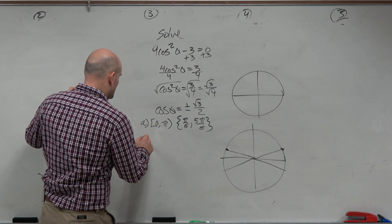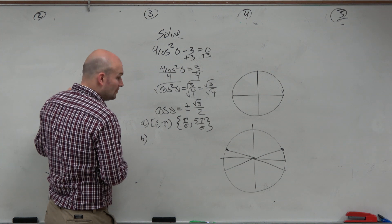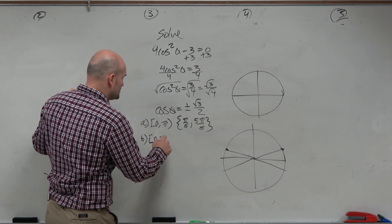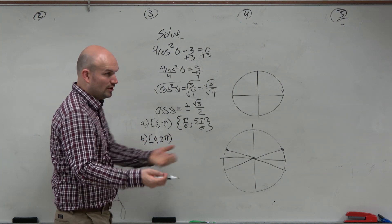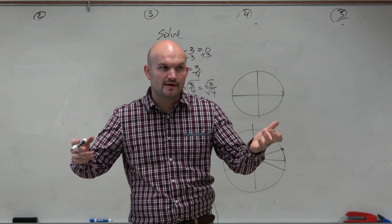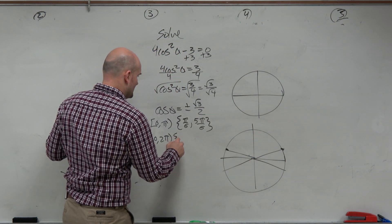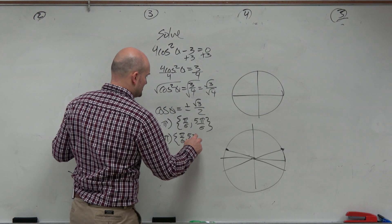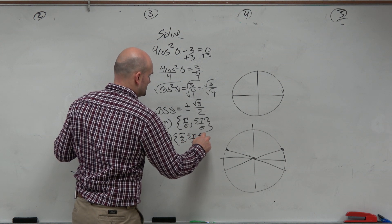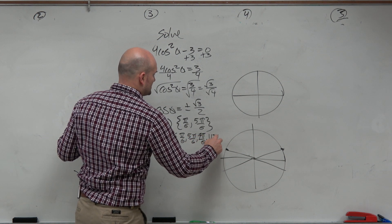The next question was find the intervals from 0 to 2 pi. Well, I like 0 to 2 pi because that's really just the unit circle. What are all the answers that are on the unit circle? And therefore, that's going to be pi over 6, 5 pi over 6, 7 pi over 6, and 11 pi over 6.